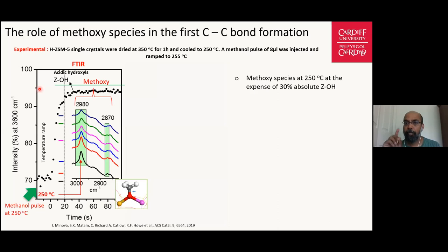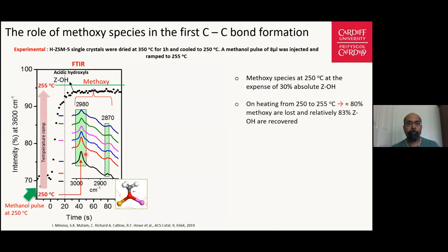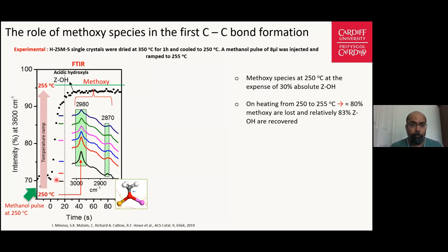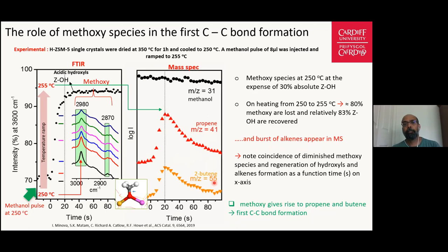Because methoxy species appear quite stable at 250 degrees C, we increased the temperature from 250 degrees by ramping in 5-degree steps. We observed a rapid decrease in intensity of the methoxy bands, which is quite interesting. Comparing the color-coded recovery of hydroxyls with the corresponding methoxy band disappearance, within about 20 seconds we see maximum hydroxyl recovery and maximum disappearance of methoxy bands, and a burst of propene and butene appears in the gas phase — indicating that propene and butene are formed directly from methoxy species. However, it should be noted that the hydroxyls are not completely recovered.